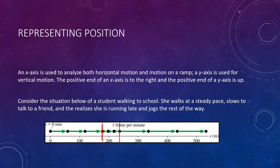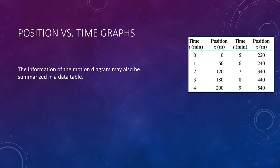The motion diagram is just one way to represent the student's motion. We could also present it as a table: at t = 0 she was at position 0; after one minute of walking at a steady pace, she was at 60 meters; after two minutes at 120, and so on. Most people are visual learners, so a table of numbers isn't as helpful as the motion diagram, which is why we tend to make visual examples rather than just tables with numbers.